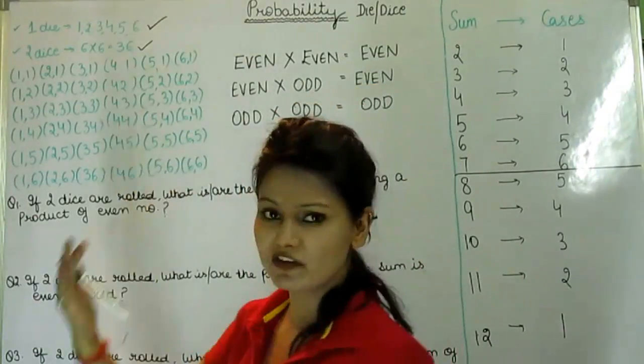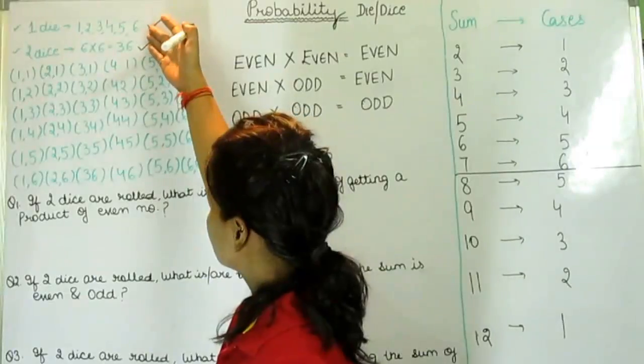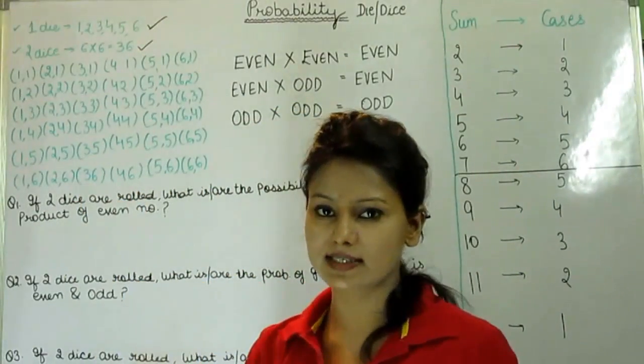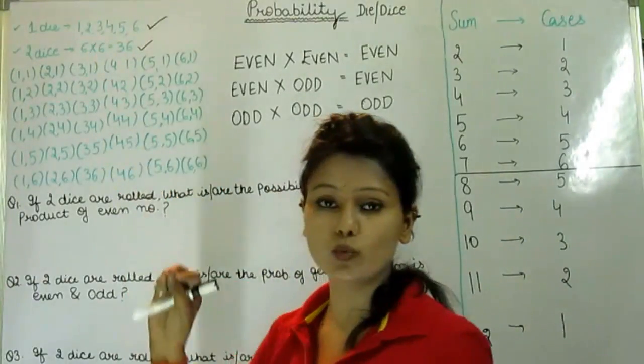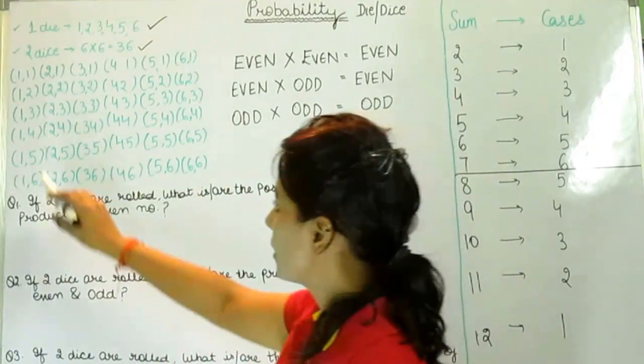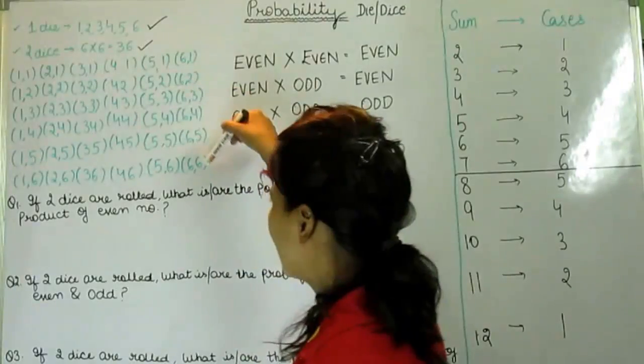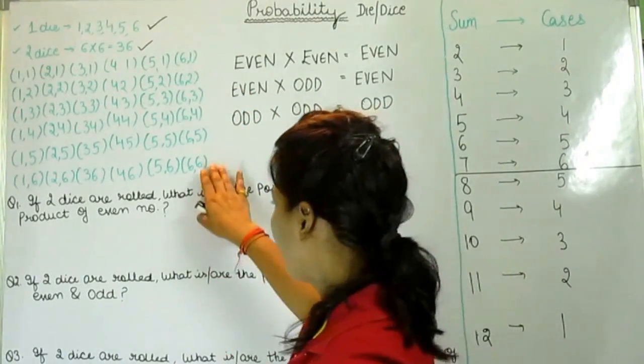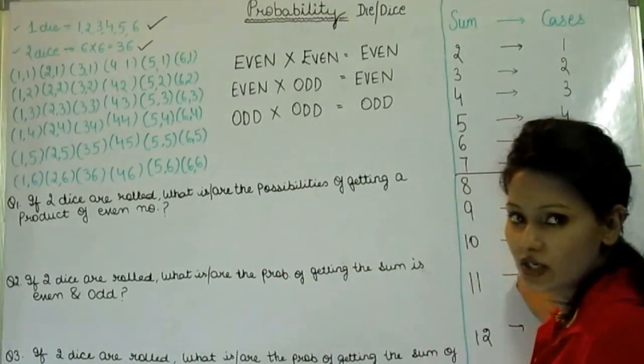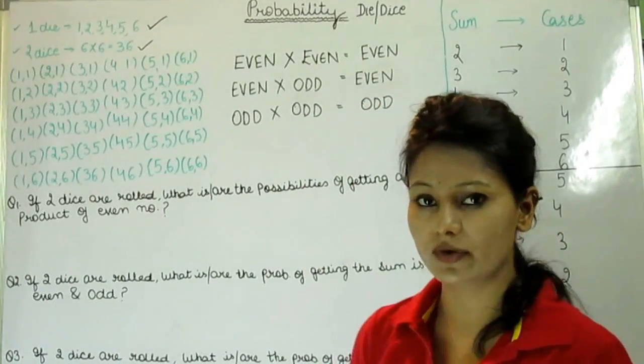In my previous video I taught you this: one die has 6 numbers and two dies, two dies value would be 36. I have taught you this chart also in my previous video. Remember this chart as well as this chart. Both charts are very important.